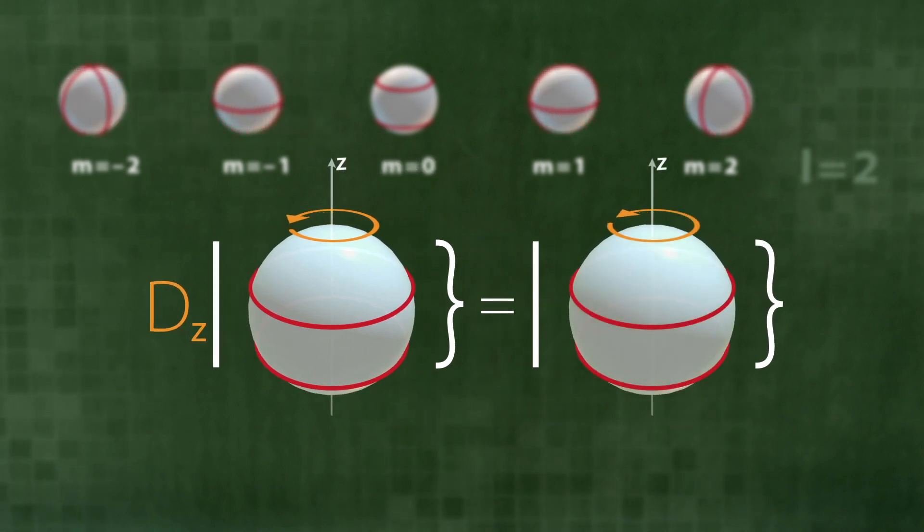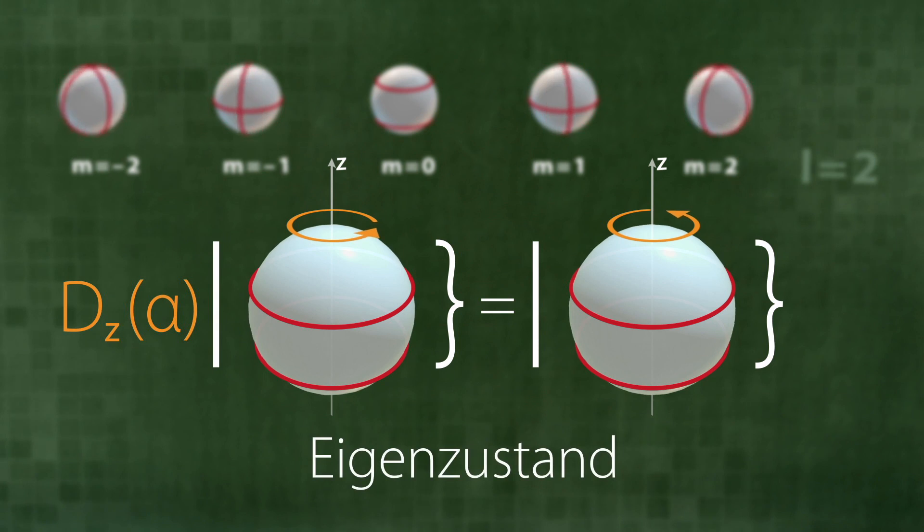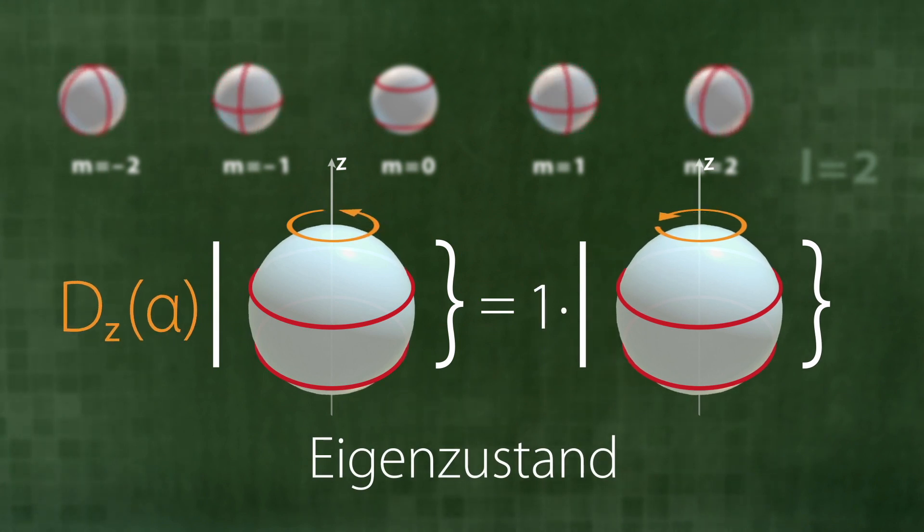This state does not change at all when it is rotated about the z-axis at any given angle alpha. It is thus obviously an eigenstate with respect to the operator Dz of alpha. Its eigenvalue is 1.